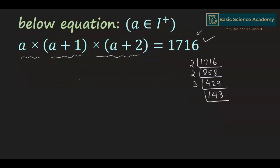Now 143 is not divisible by 2, 3, 5, and 7. Hence the next prime number is 11.